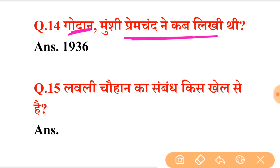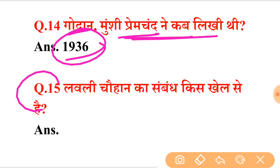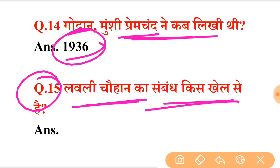Next question: when was the novel 'Godan' written? The answer is 1936. There was also a question about the Richter scale — if you know the answer, you can comment below and we will add it in the next video.